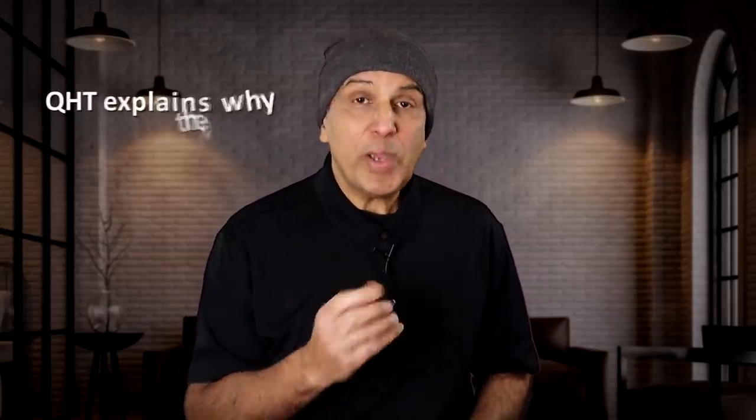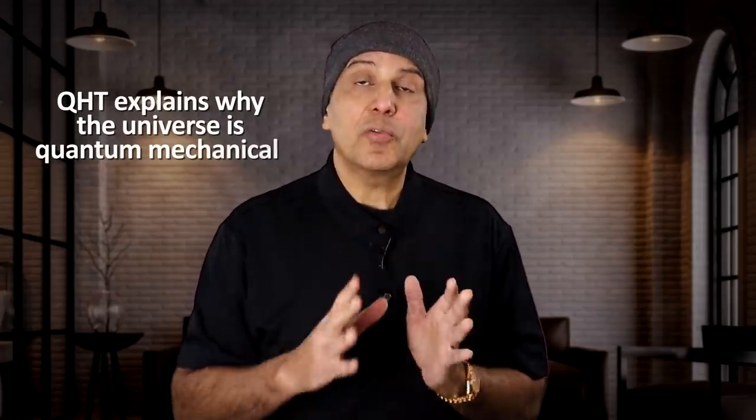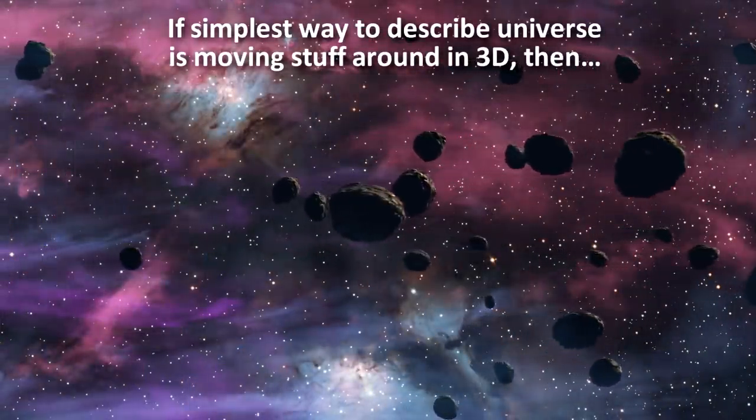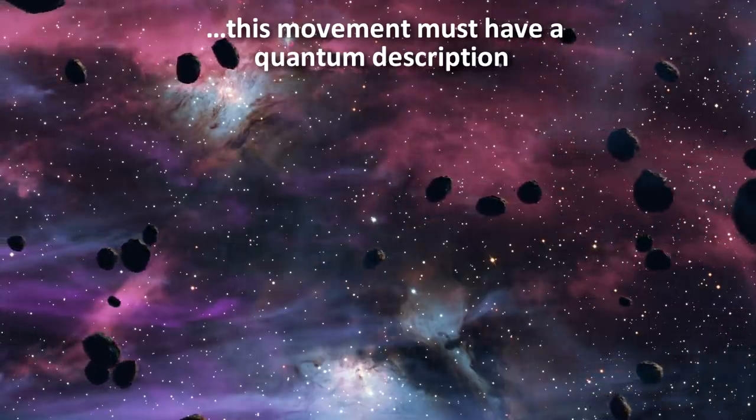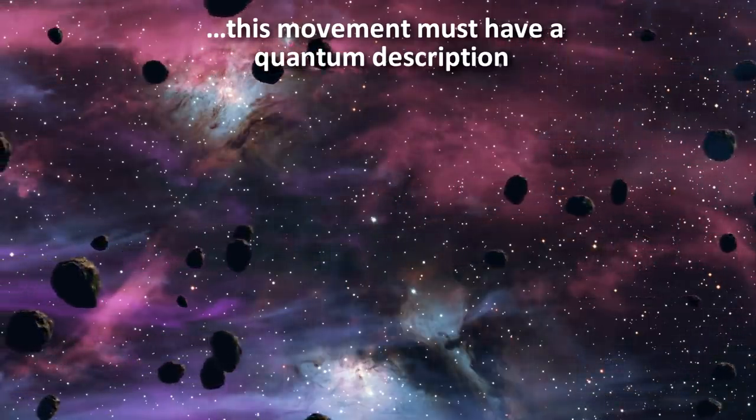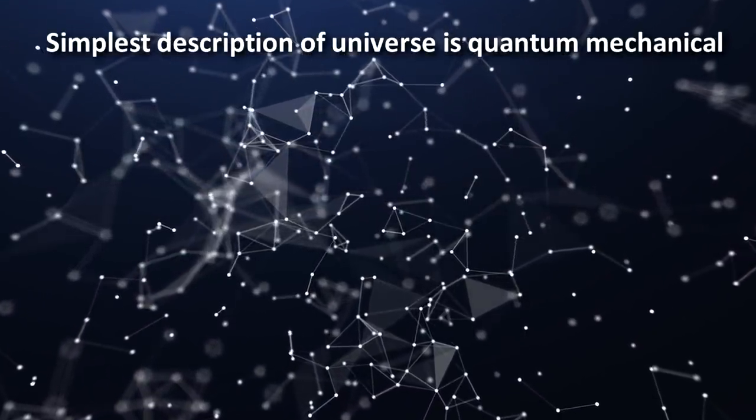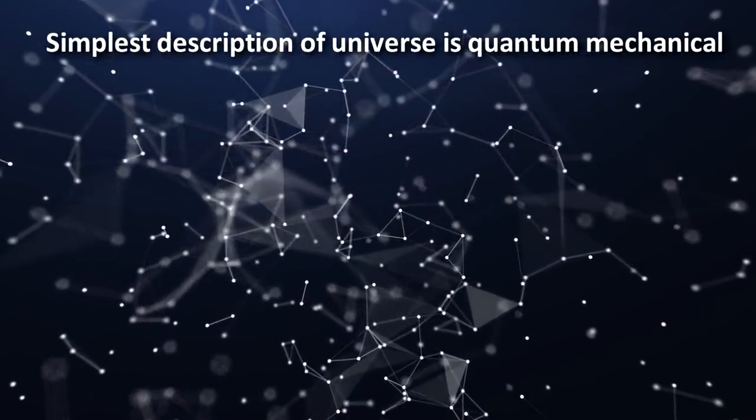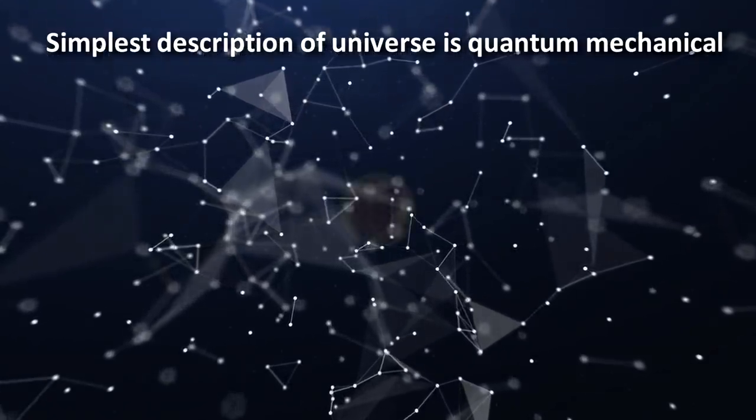For example, QHT actually offers an explanation as to why the universe is quantum mechanical. If you buy that the simplest way you can describe the universe is moving stuff around in 3D space, then the math shows that this movement has to have a quantum description. In other words, the math of the simplest description of the universe dictates that the universe must be quantized. This is a central result of QHT.